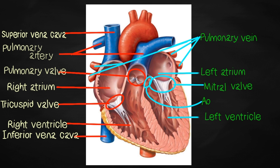We have another important valve here — the aortic valve. This valve closes during atrial contractions and opens during ventricular contraction, thus preventing backflow of oxygenated blood from the aorta to the left ventricle. Lastly, the aorta: it carries oxygenated blood from the heart to the systemic arterial circulation to provide oxygen and nutrients to our body.